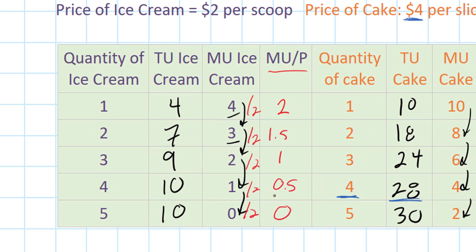Now I can see that the marginal utility per dollar for ice cream decreases as the quantity of ice cream I consume increases. Of course the price of ice cream stays the same, but the additional utility I get decreases, causing MU divided by P to decrease as my consumption increases.